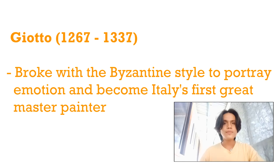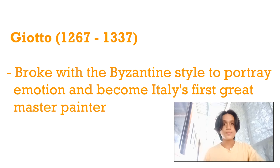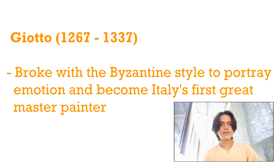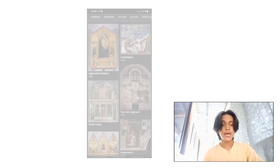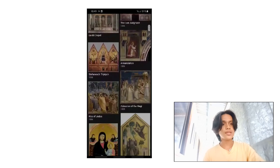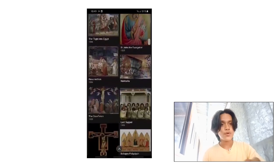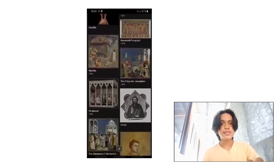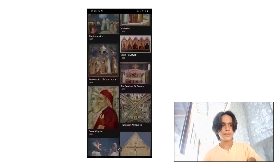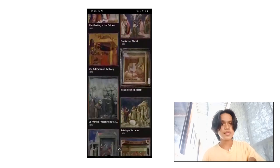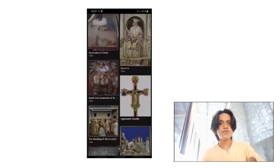Next in the list is Giotto di Bondone, known mononymously as Giotto. He was an Italian painter and architect from Florence during the late Middle Ages, born around 1256–1257 in Vespignano near Florence, and died in 1337 in Florence. He worked during the Gothic and proto-Renaissance period and was regarded as one of the most important Italian painters of the 14th century, whose works pointed to the innovations of the Renaissance style. For almost seven centuries, Giotto has been revered as the father of European painting and the first of the greatest Italian masters.